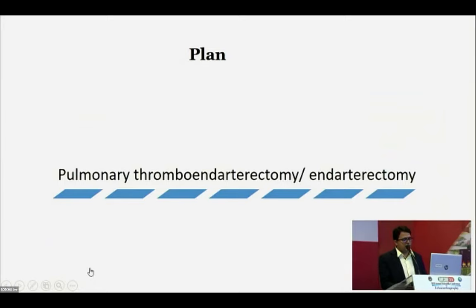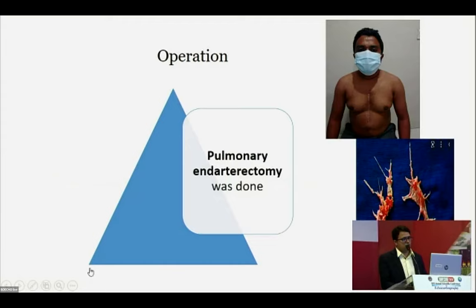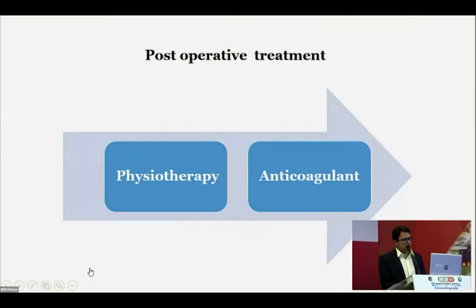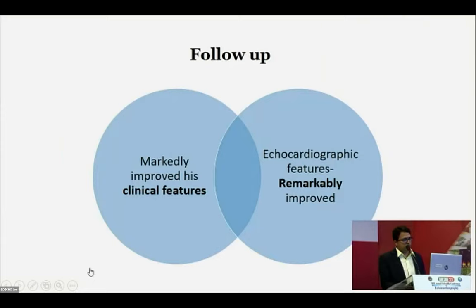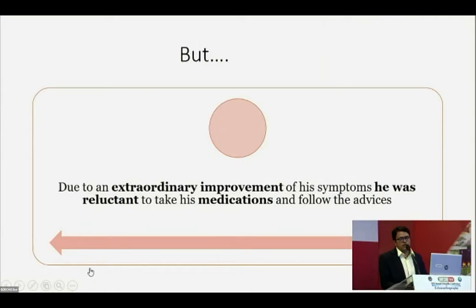The plan was pulmonary thromboendarterectomy — challenging, since its development in the 1970s there are very few expert surgeons worldwide. Ultimately, surgery was performed and the patient recovered well. He underwent physiotherapy and anticoagulation, showing marked improvement in clinical and echocardiographic parameters. However, due to extraordinary improvement in his symptoms, he became non-compliant with follow-up and medication. Seven months later he presented with respiratory infection and mild dyspnea.